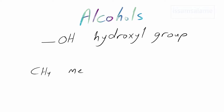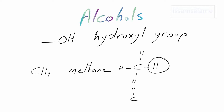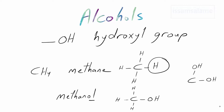For example, if we have methane and one of the hydrogens is replaced by a hydroxyl group, then we're going to call it methanol. When we have two hydroxyl groups we use the prefix di-, and three hydroxyl groups tri-, and so on. So if we have methane with two hydroxyl groups, it's going to be called methanediol.